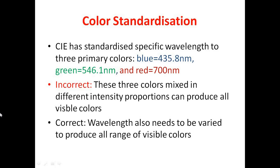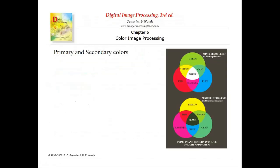Varying the intensity proportions of the primary colors alone will not work. You need to use multiple wavelengths in different intensity proportions to get a new secondary color. To cover the entire range of visible colors, you need to vary wavelengths along with intensity proportions. Let us discuss some more about primary colors and secondary colors.